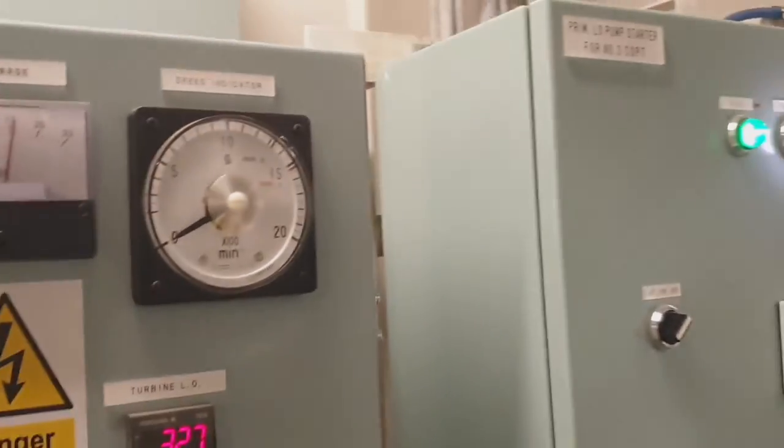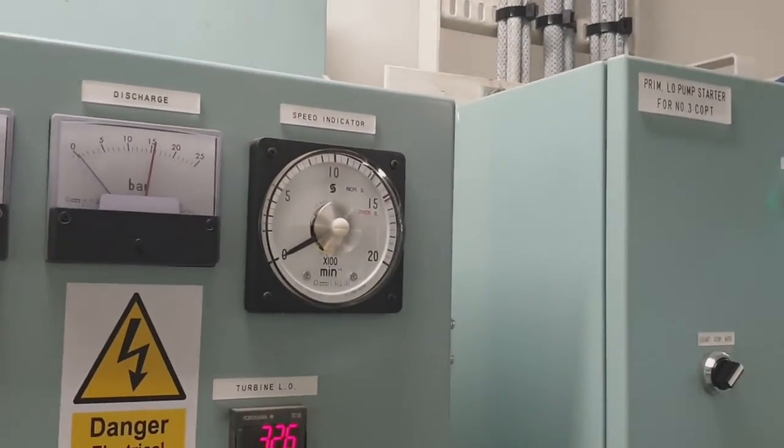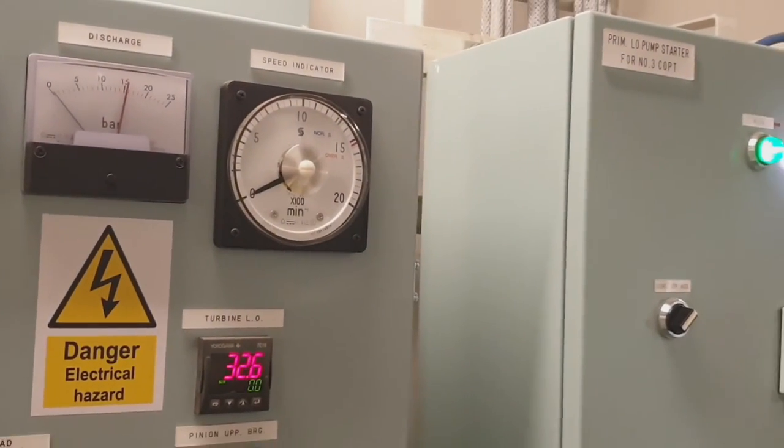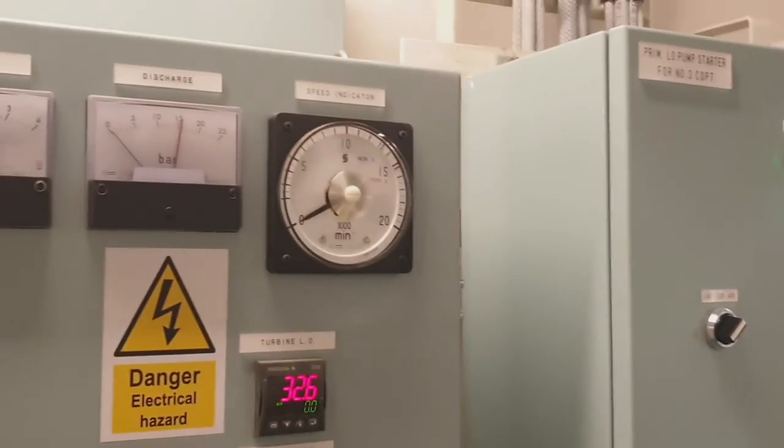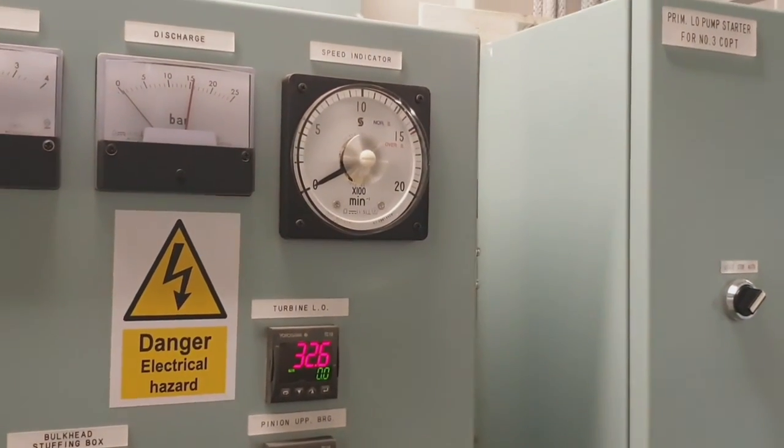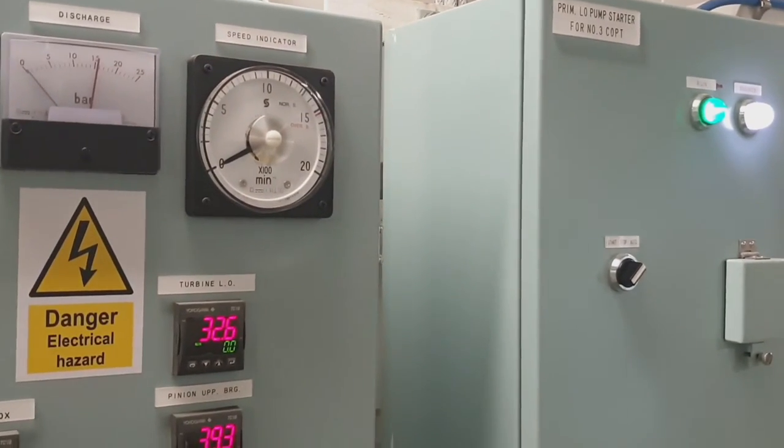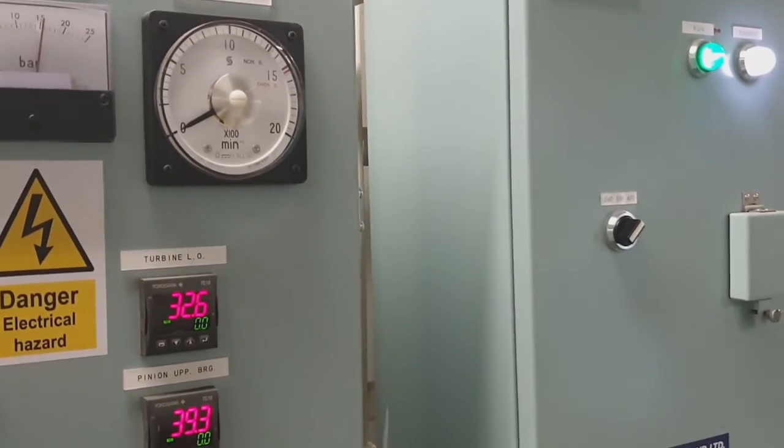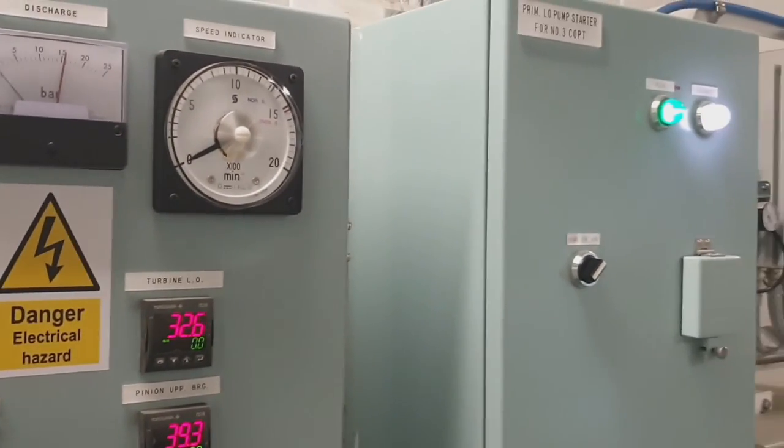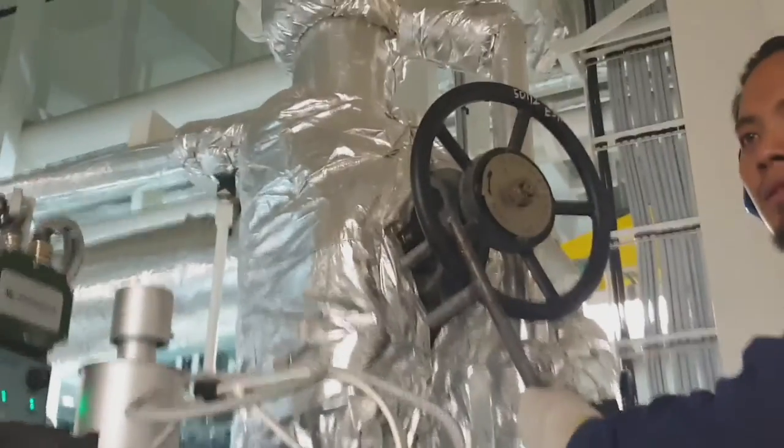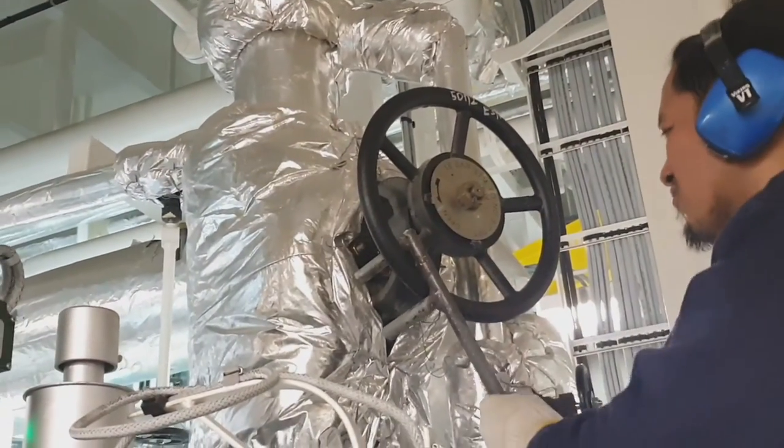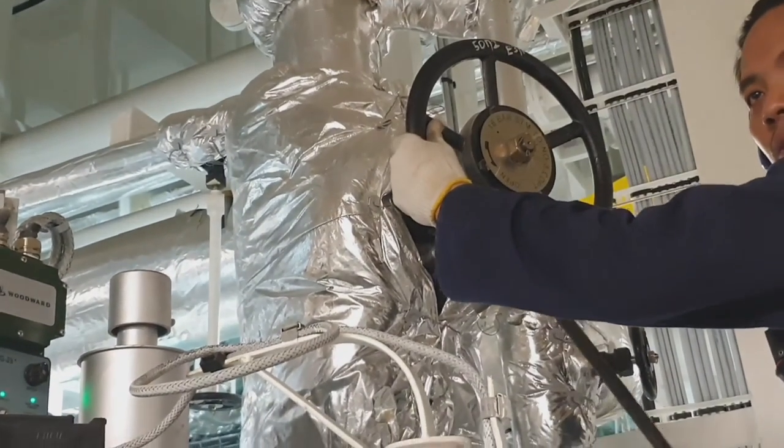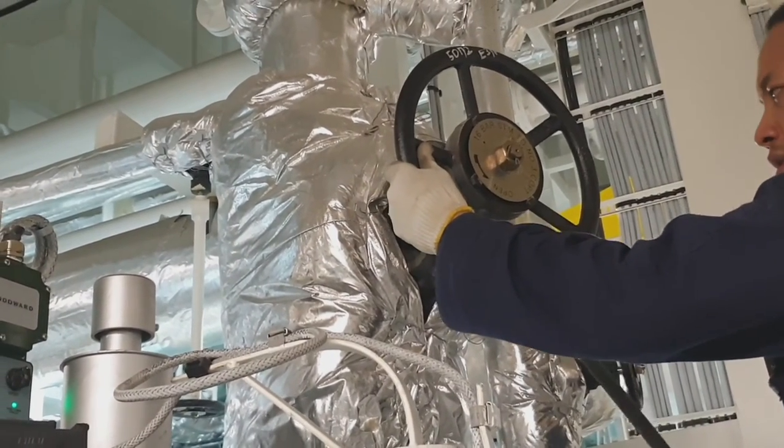The situation now is that the inert gas system is running, since it has an interlock that the cargo pump will not start unless the inert gas system is running. Right now we will slowly start the cargo oil pump by opening slowly the steam inlet valve of the cargo oil pump turbine.